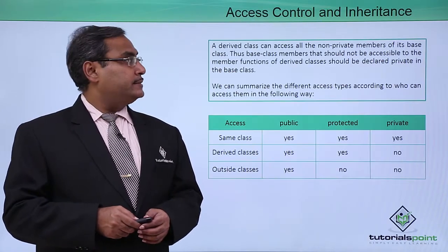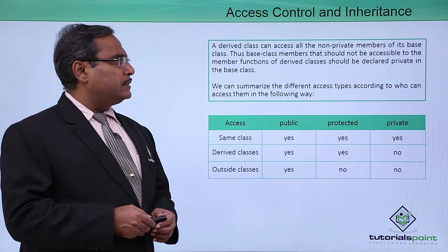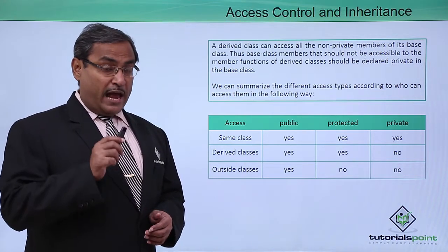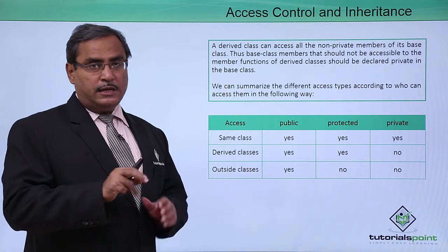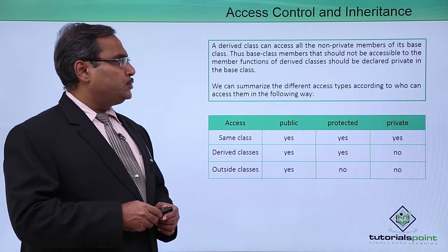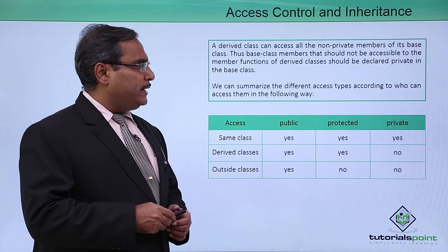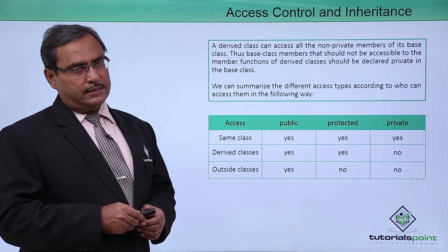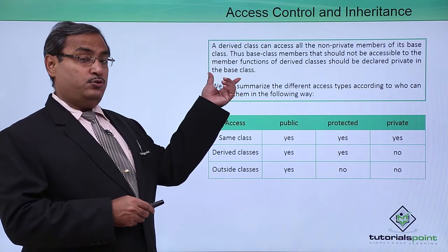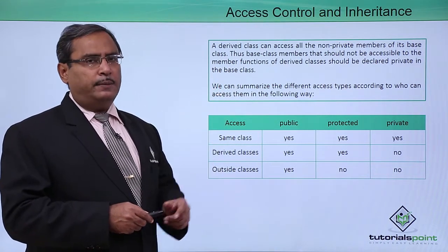Access Control and Inheritance: A derived class can access all the non-private members of its base class. If the base class has any private data members or function members, they are not inherited by the derived class. Base class members that should not be accessible to the member functions of the derived class should be declared private in the base class. If we do not want certain members to be inherited by the derived class, those members should be written under the private scope.